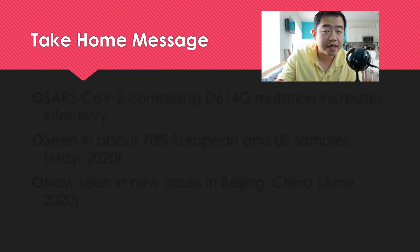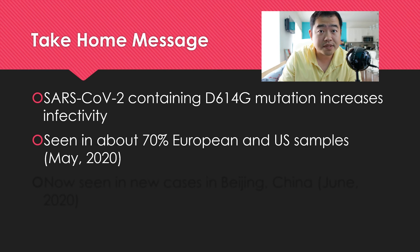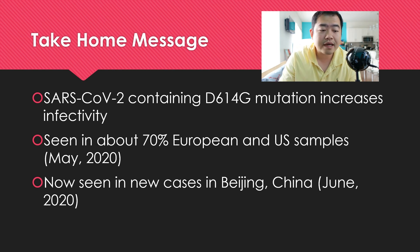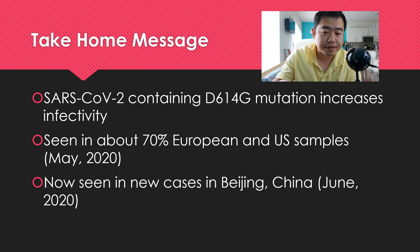Very quickly, the take-home messages for today's presentation: first, SARS-CoV-2 containing the 614G mutation has increased infectivity and is seen in about 70% of European and U.S. samples as of May — it could be even higher in June, though we don't have public data yet. More importantly, this mutation, previously not seen in China's infected cases, is now being seen in new cases in Beijing, China, in June 2020. This shows the virus has made a comeback with this mutation back to China, and authorities there are very carefully tracking all infected cases.